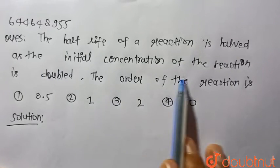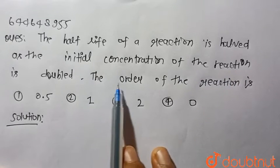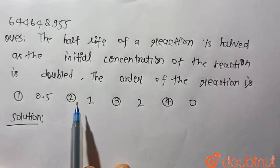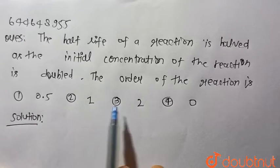The half-life of a reaction is halved as the initial concentration of the reaction is doubled. The order of the reaction is: four options are given - first one is 0.5, second is first order, third is second order, and fourth is zero order.